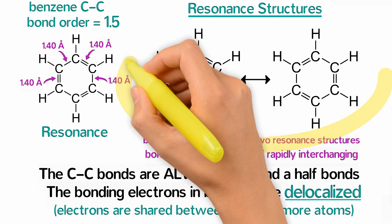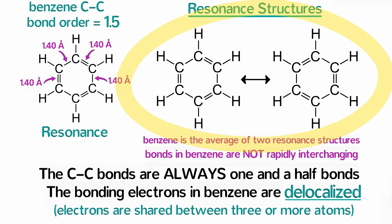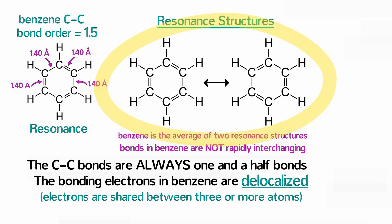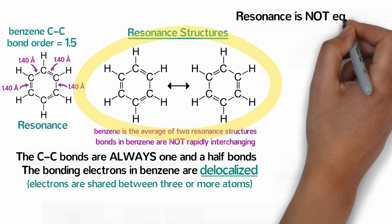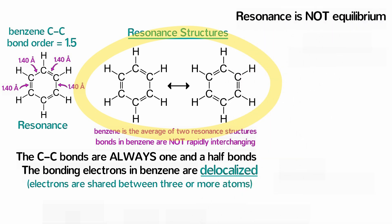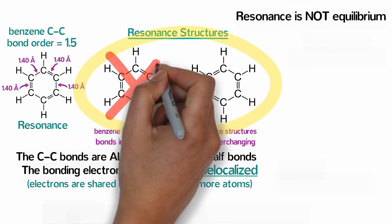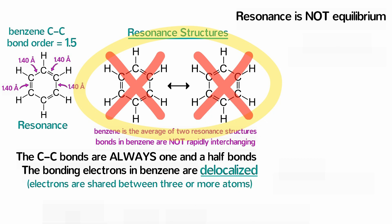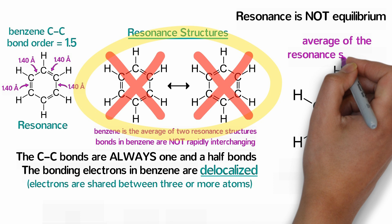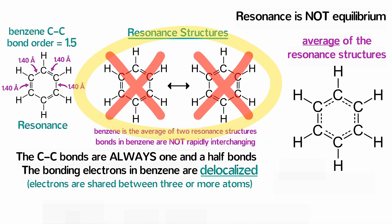When you look at these two resonance structures of benzene, you might be tempted to think that resonance is somewhat similar to equilibrium. It's not. Benzene does not have three double bonds. Neither of the two resonance structures is ever correct. Rather, the true structure of benzene is an average of the two resonance structures, and benzene always has 1.5 bonds between all the carbons.